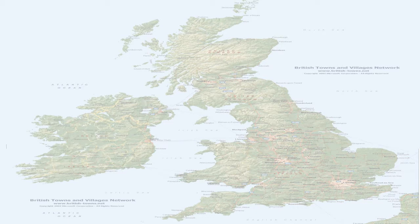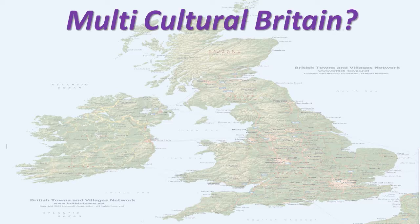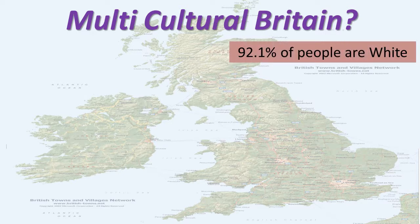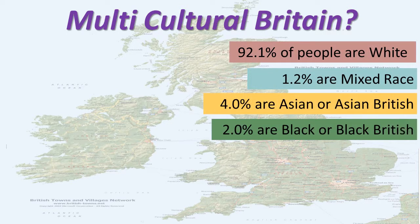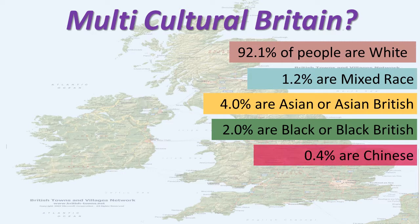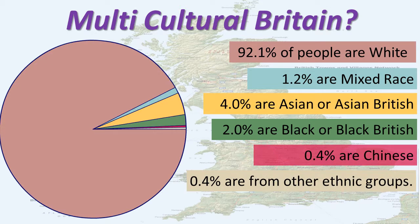In Britain today, Britain tries to have a multicultural approach. Looking at the percentages of people in the UK, you can see very clearly that over 90% of the people in the UK are white. On a pie chart, it's clear that the predominant group of people are white British, and not the many other races. So whenever you hear people suggesting otherwise, the numbers tell a different story.